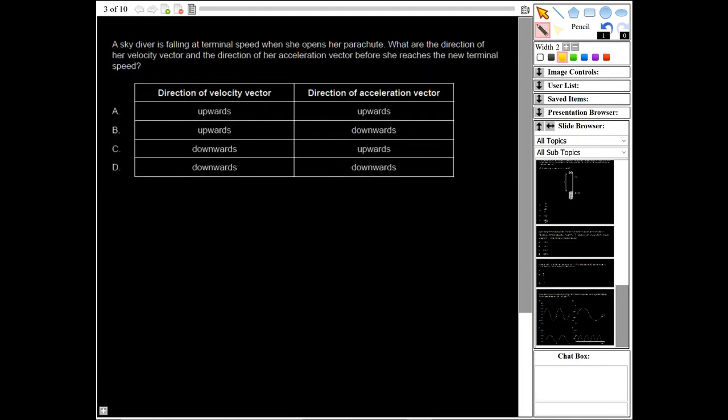Okay, next question. Question three says a skydiver is falling at terminal speed when she opens her parachute. What are the direction of her velocity vector and the direction of her acceleration vector before she reaches the new terminal speed?